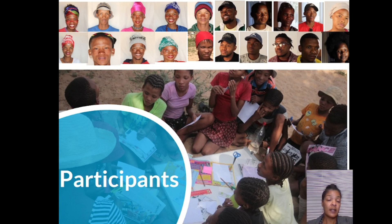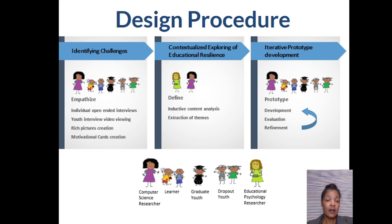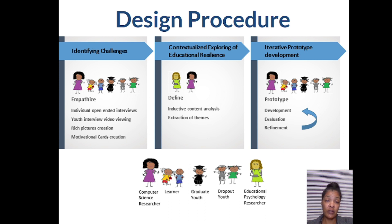In our case study in Namuria, 10 SAN youth who had completed secondary school participated, as well as 10 SAN youth who dropped out of school, and 12 SAN members in grade 4 through 7. In accordance with our aim, the research approach was divided into three stages: identifying adversities based on previous and current obstacles, contextualized exploration of educational resilience, and iterative prototype construction and evaluation.